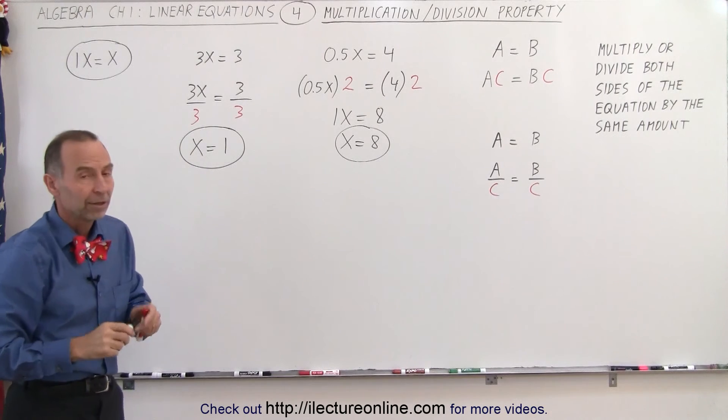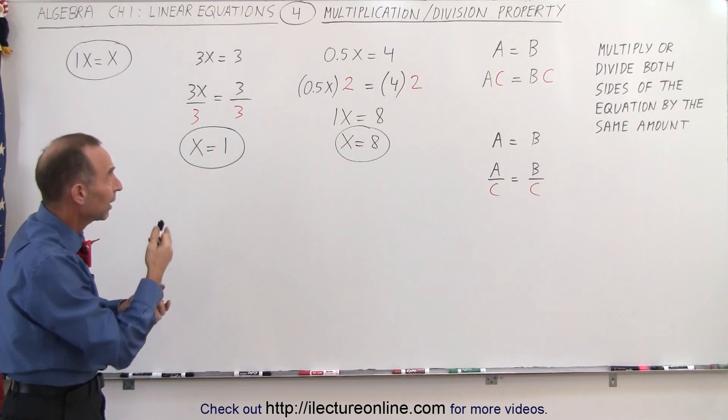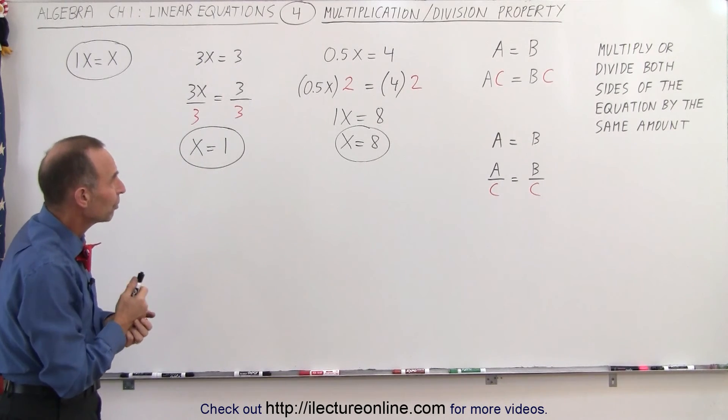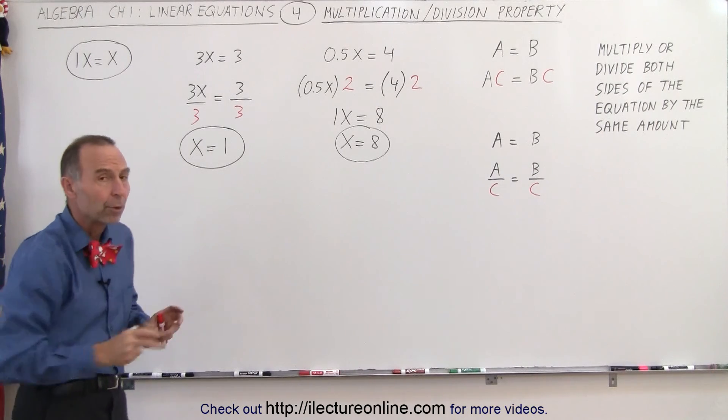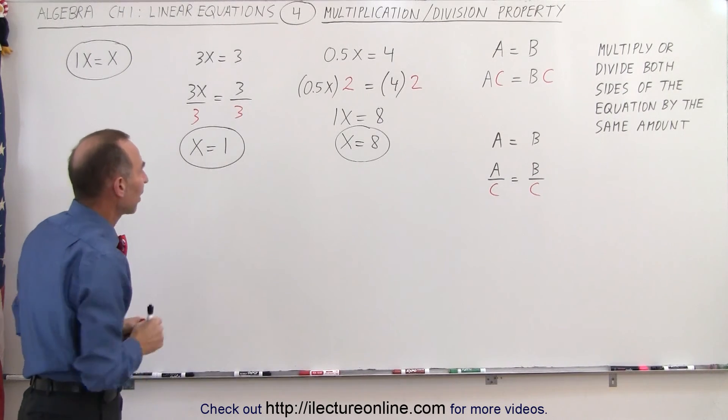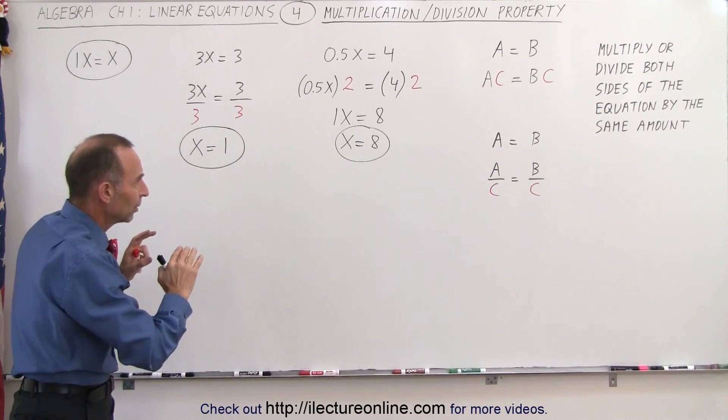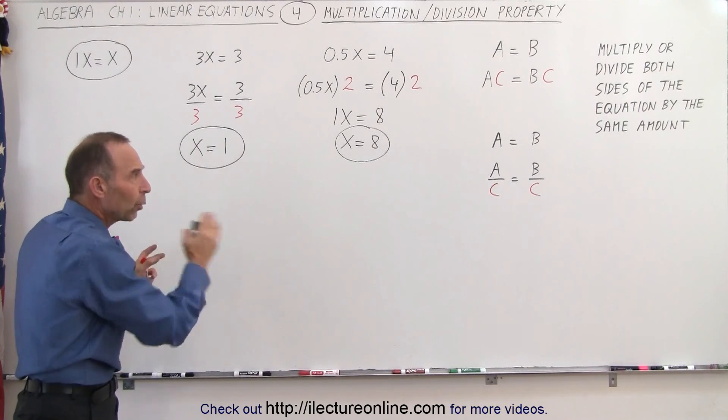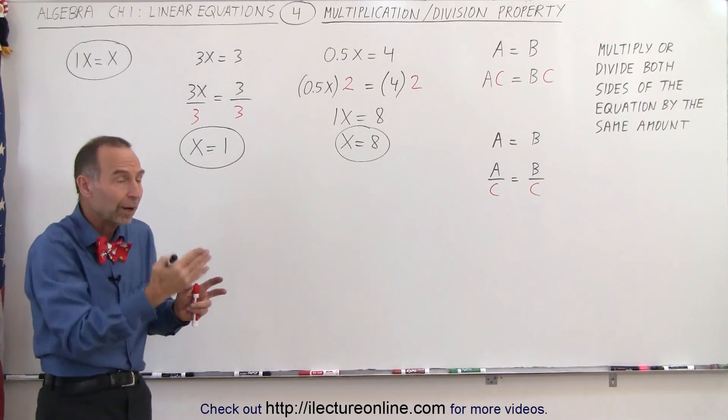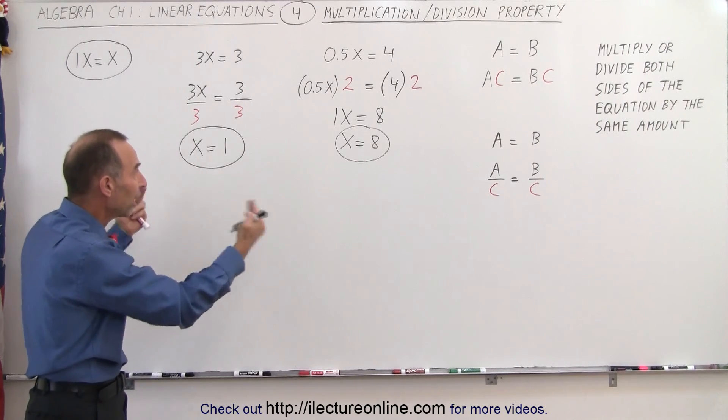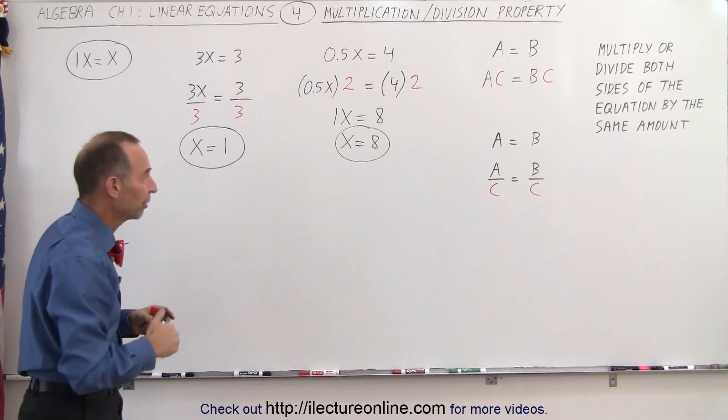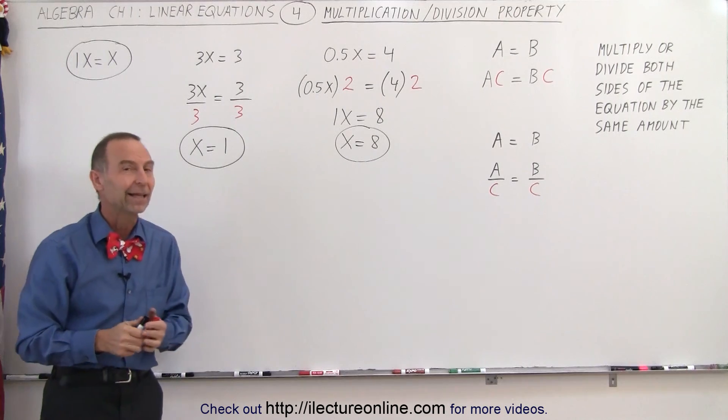So you can see that's what we mean by using the multiplication or division property. We either multiply both sides of the equation by the same thing, or we divide both sides of the equation by the same thing. Nothing changes as far as the equality. The left side will still equal the right side. These are simply techniques to help us solve for the unknown variable X in this case, and that's how it's done.